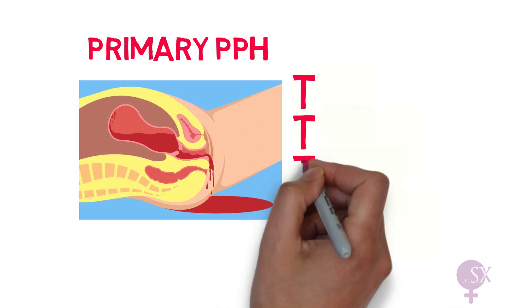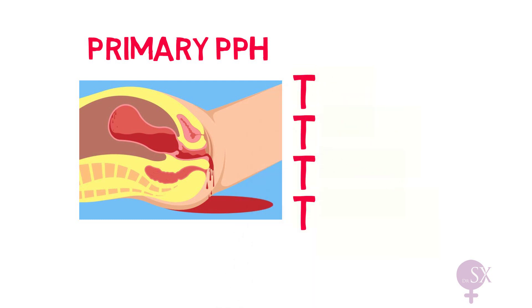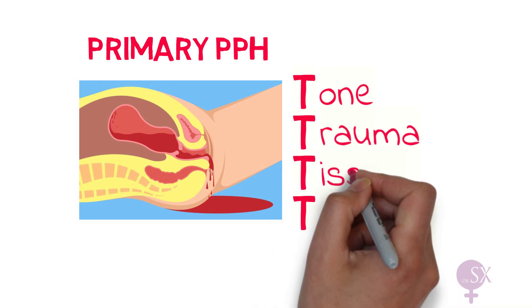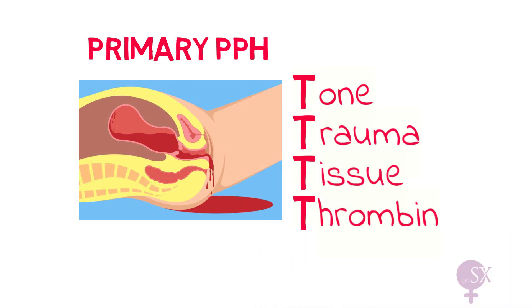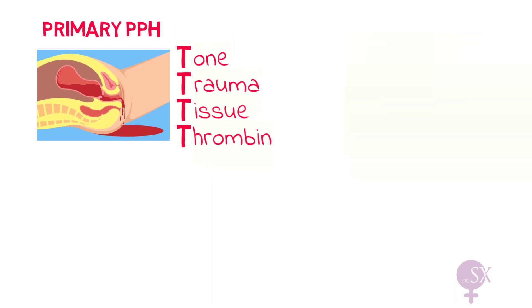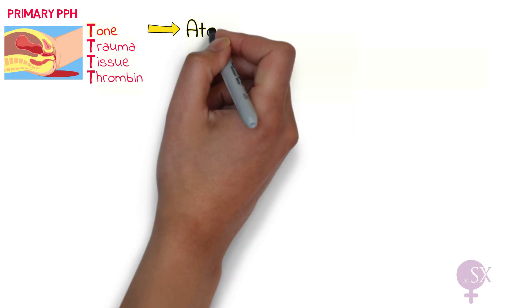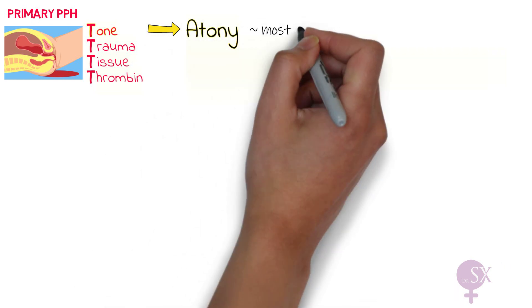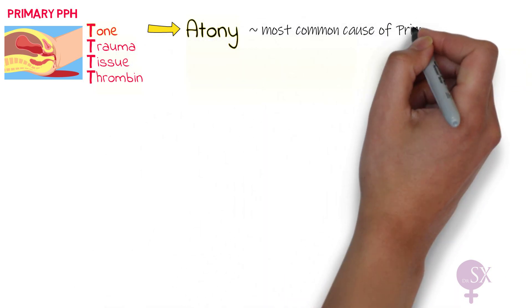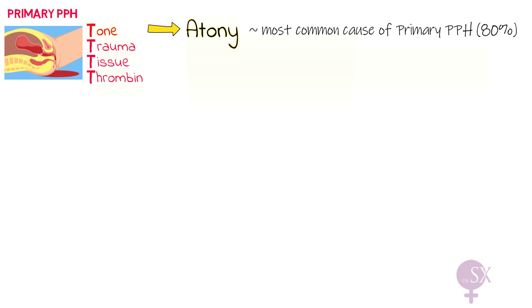We can remember the causes of PPH with the four T's: tone, trauma, tissue, and thrombin. Starting with tone, uterine atony is the most common cause of primary PPH — 80% of the time PPH is secondary to uterine atony. Normally the myometrium contracts, squeezing the placental arteries and clamping them shut, therefore reducing the bleeding.